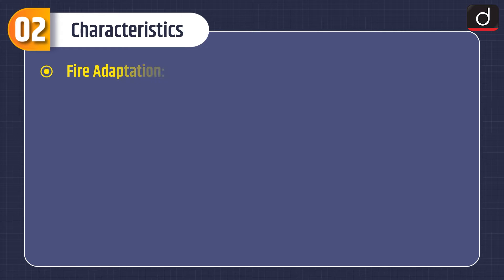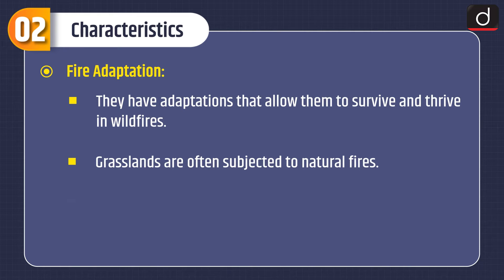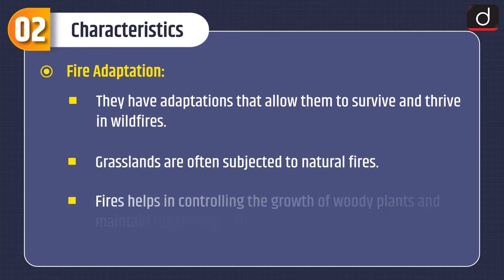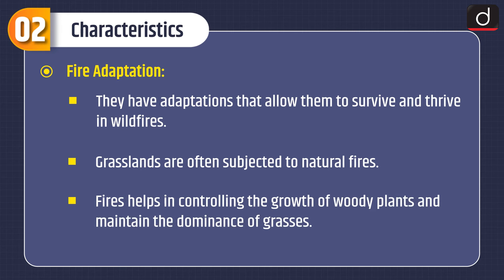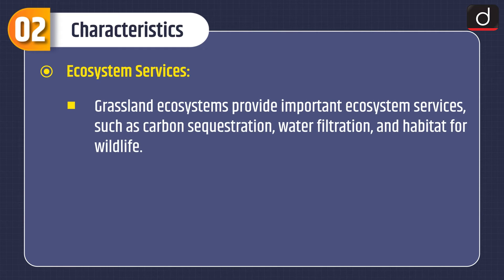Fire adaptation: grasslands have adaptations that allow them to survive and thrive in wildfires. They are often subjected to natural fires, which help in controlling the growth of woody plants and maintain the dominance of grasses. Ecosystem services: grassland ecosystems provide important services such as carbon sequestration, water filtration and habitat for wildlife.